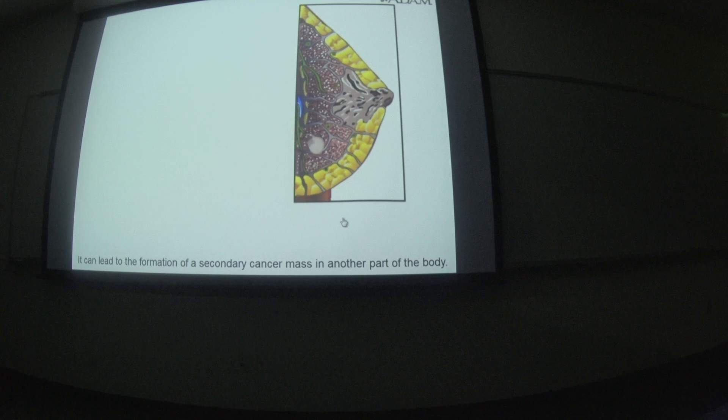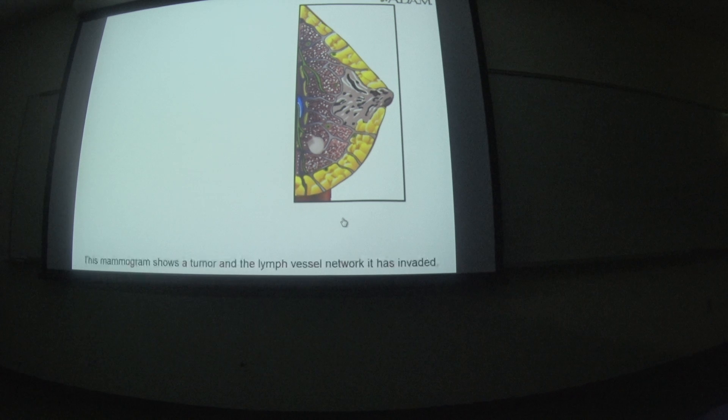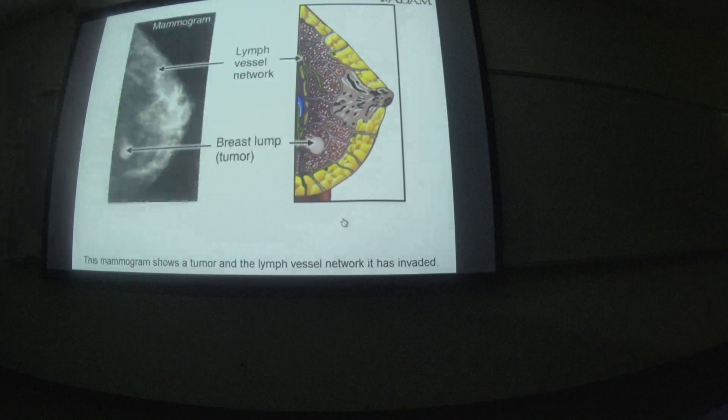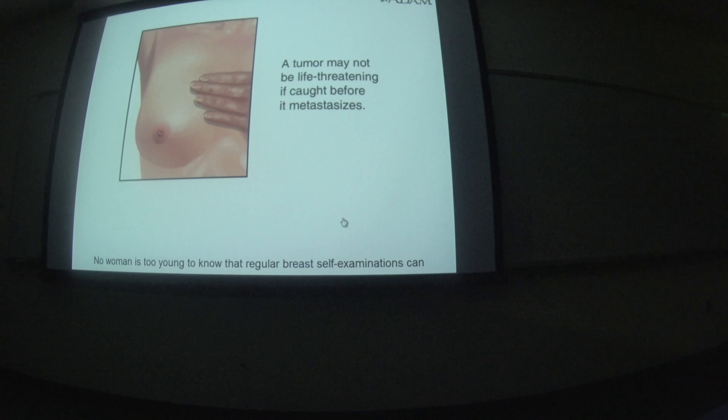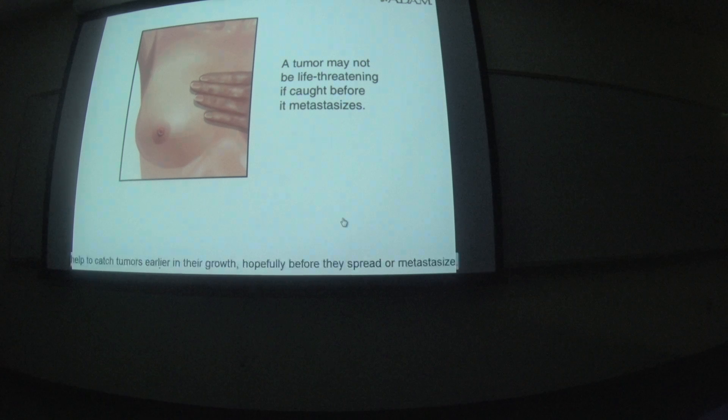It can lead to the formation of a secondary cancer mass in another part of the body. This mammogram shows a tumor and the lymph vessel network it has invaded. No woman is too young to know that regular breast self-examinations can help to catch tumors earlier in their growth, hopefully before they spread or metastasize.